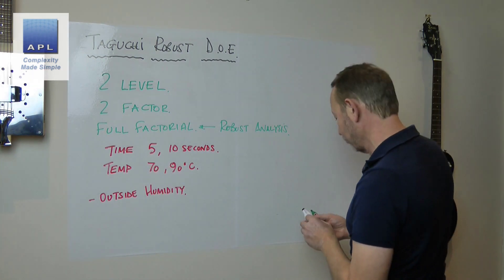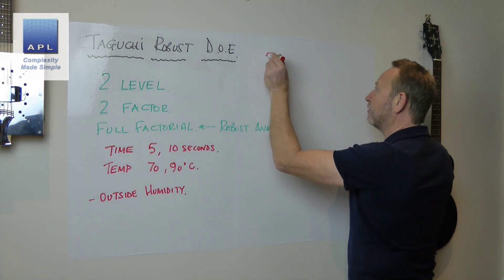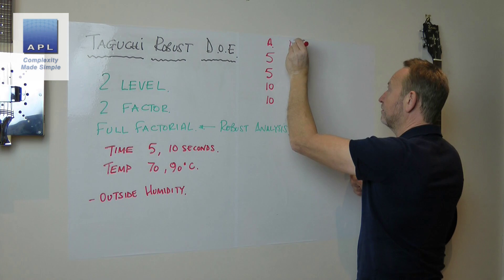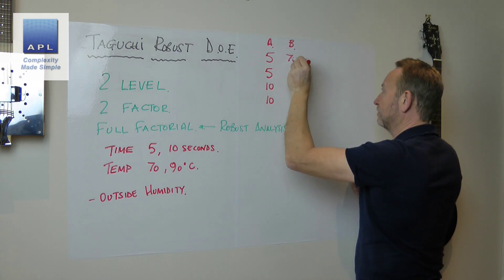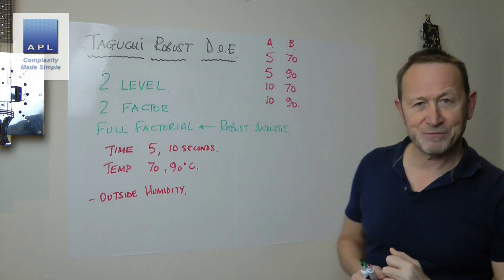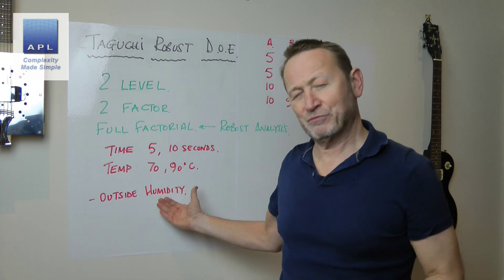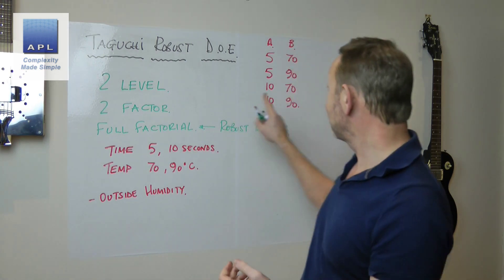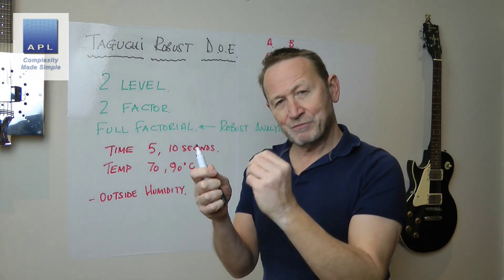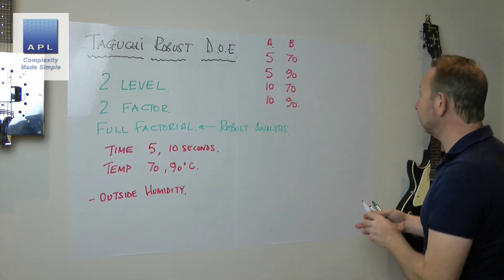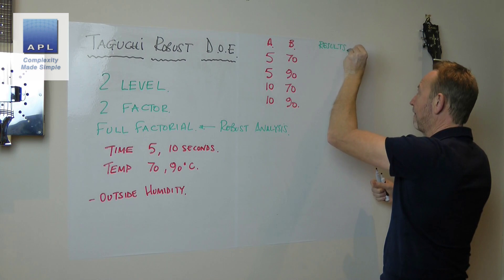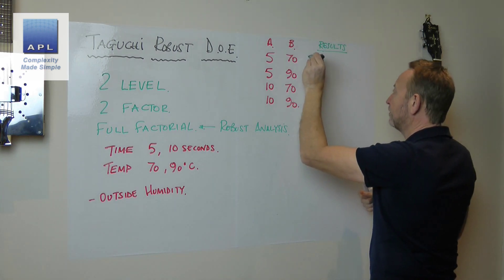If we just take the two-factor full factorial, it's going to look like this: Factor A is 5, 5, 10, 10 and Factor B is 70, 90, 70, 90. That's the experiment we're going to run. We haven't got humidity in this experiment because I can't control it — I can't make it a three-factor full factorial. But what I can do is allow humidity into this experiment in a very special way. What I'm going to do is collect a results table with three columns of data.